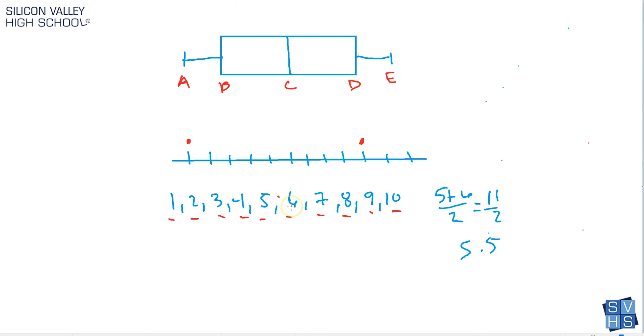So our median here is right here—it's 5.5. Let's go 1, 2, 3, 4, 8—1, 2, 3, 4, 5 and a half. So it's right there in the middle, and that's legal. You can have a decimal as a median.